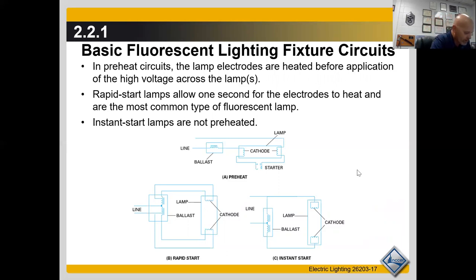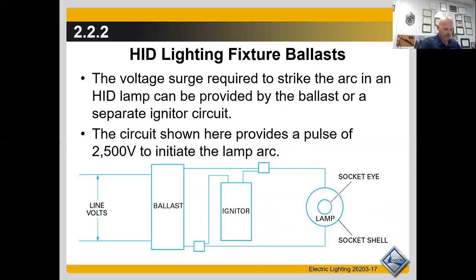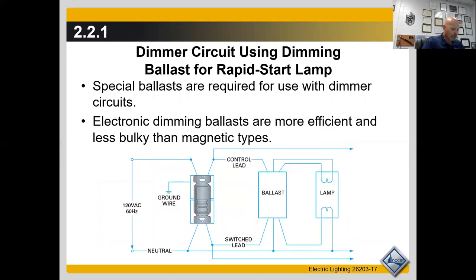Categories of ballasts include standard ballast, high efficiency ballast, hybrid ballast, electronic rapid start ballast, and electronic instant start ballast. The electronic instant start ballast has the lowest system wattage and highest system efficiency. Lamp life is slightly shorter than with rapid start ballast, but it saves the most electricity and is the most efficient. The test question asks: which provides high voltage across the lamp's electrodes at startup causing them to emit electrons? The answer is the instant start ballast.